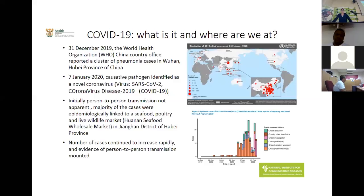With any emerging outbreak, the key questions are: can it spread efficiently between people, and is it therefore a global threat? Initially, cases were linked to a market in Wuhan, but very rapidly evidence emerged that this virus does in fact spread efficiently between people. This made the world take notice and understand it was a potential threat more widely than just in China.